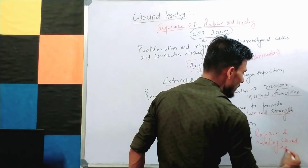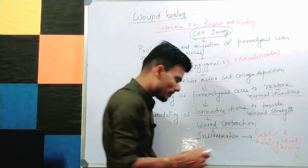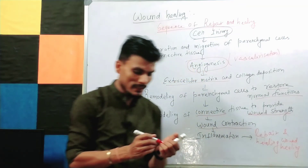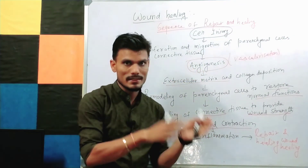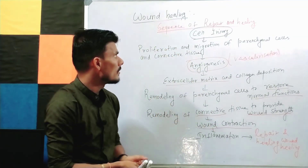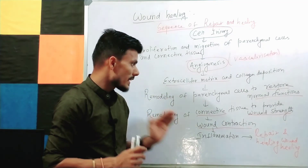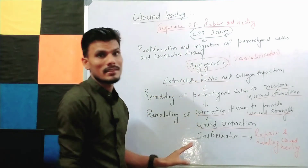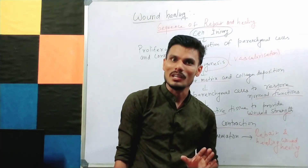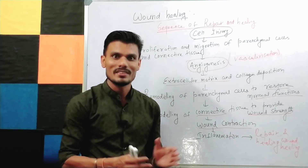I've discussed in general the repair and the sequence of wound healing. There are two types of wound healing — primary wound healing and secondary wound healing — which I'll be discussing in the next video. I hope this video is helpful. Please like, share, and subscribe, and don't forget to comment. Thank you all.